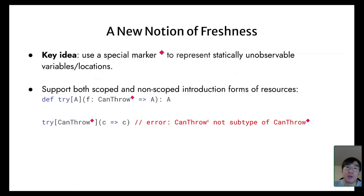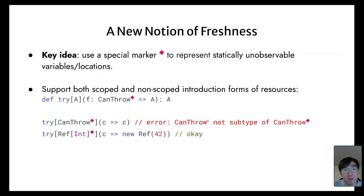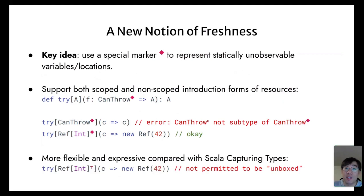An important use of the freshness marker is to support both scoped and non-scoped introduction forms of resources. For example, here we have a try combinator that takes a function as input and provides the capability to throw an exception. We do not want this can-throw capability to escape from this scope, since then the thrown exception may not be handled. This is achieved in our system since the qualifier for can-throw with a variable C is not a subtype of the freshness marker. Moreover, we can also support non-scoped introduction forms—for example, returning a new reference cell in the body of the function passed to this combinator. Compared with capturing types, thanks to the freshness notion, our calculus is more flexible and expressive in terms of supporting non-scoped introduction forms of resources.